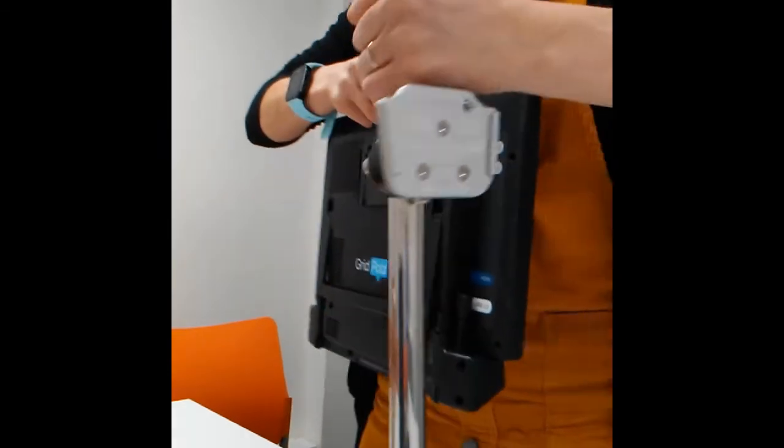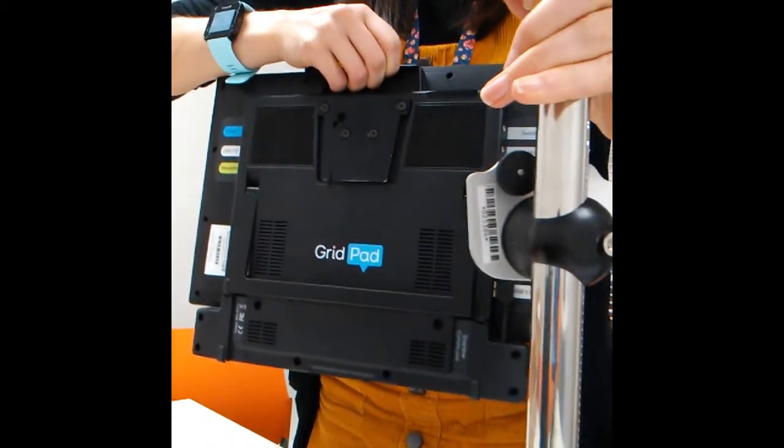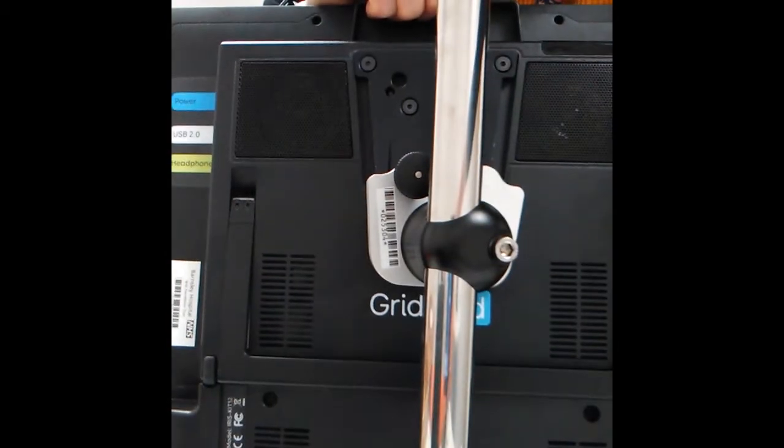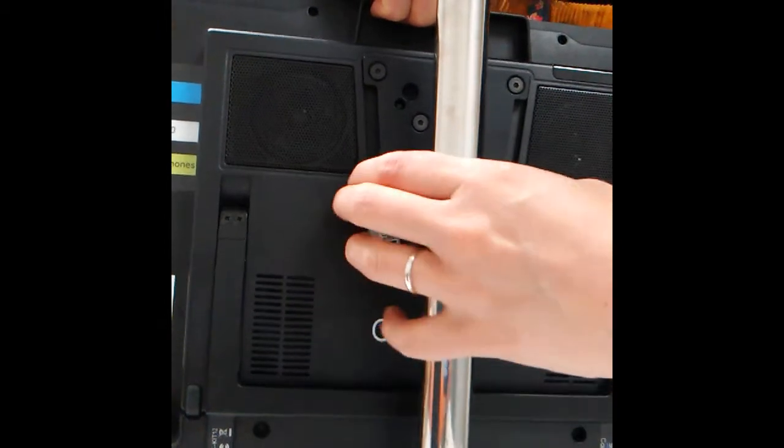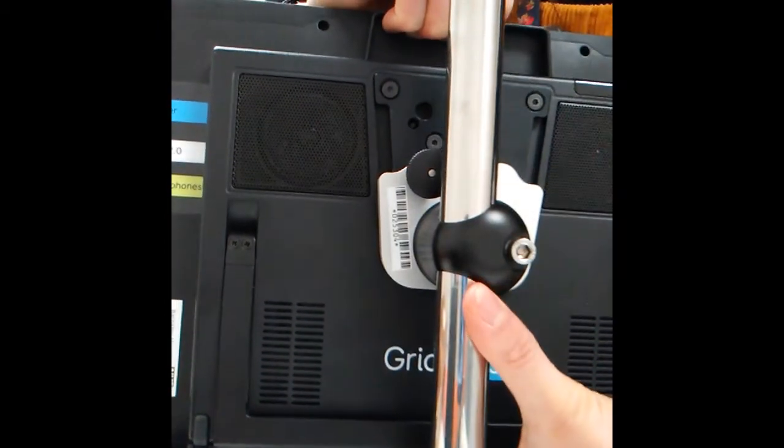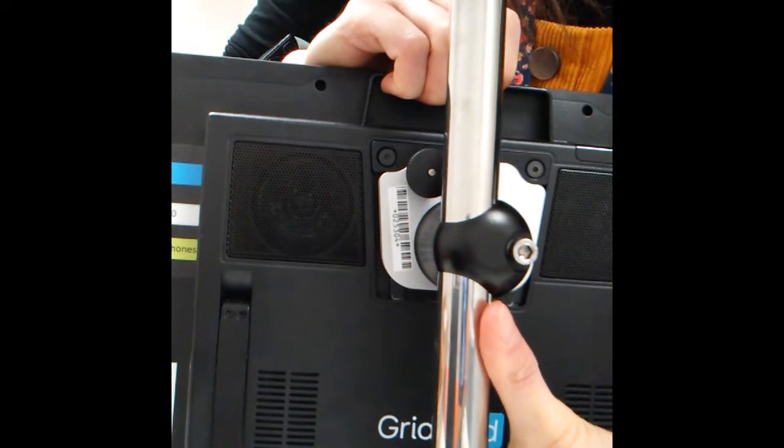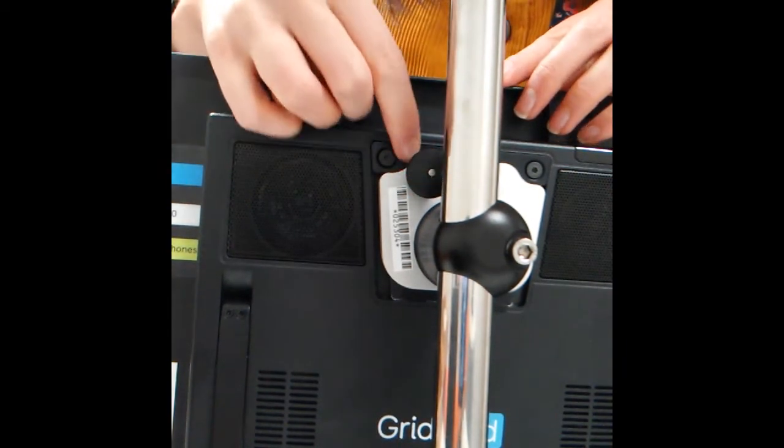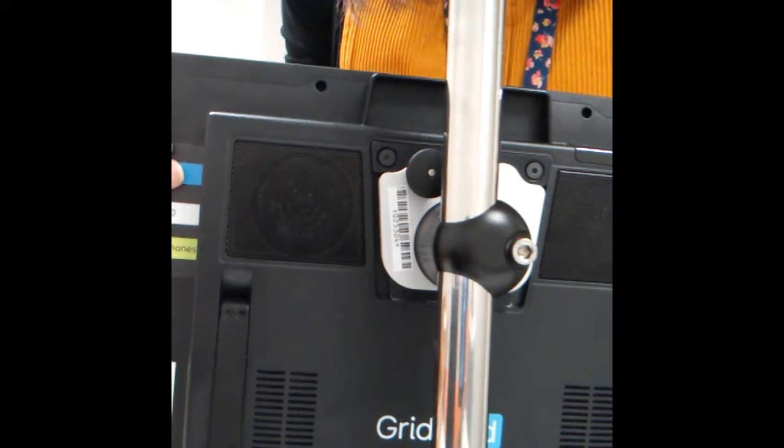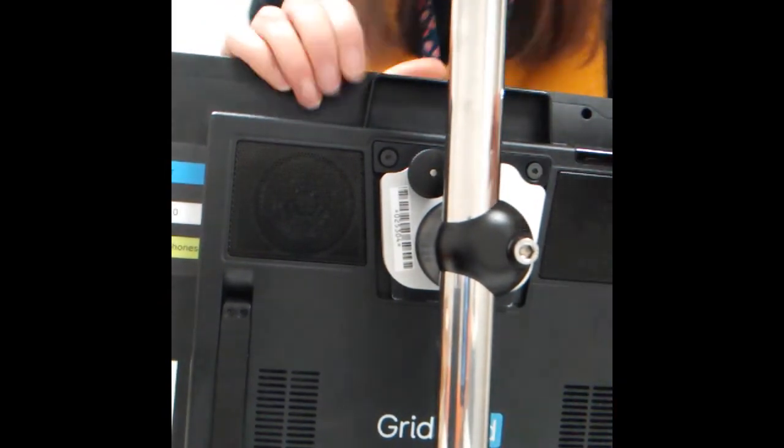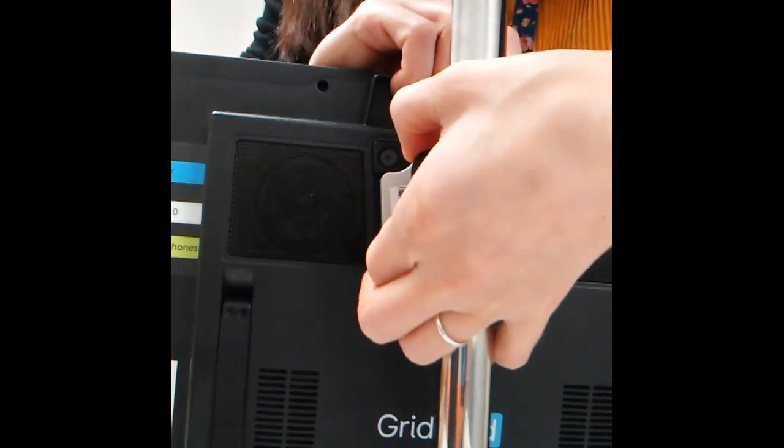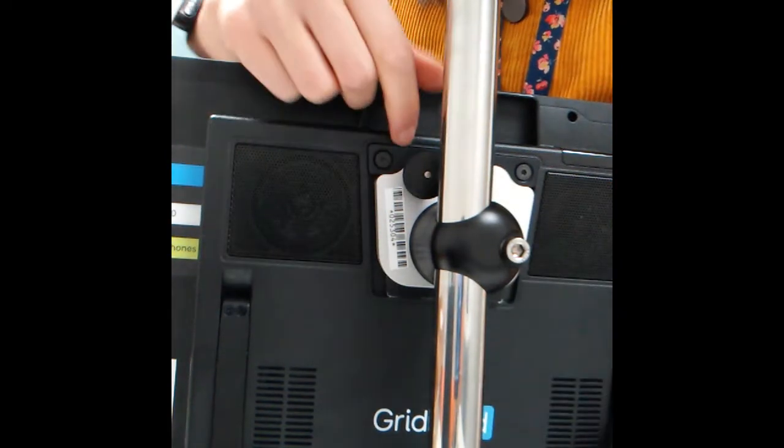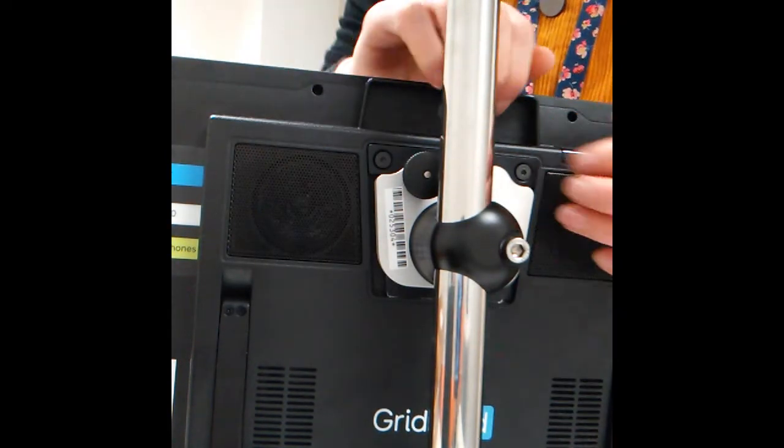So I will turn it round so you can be able to see a bit better. All we need to do is just slot that on. What you should do is you should get just a nice click when the pin goes into the hole in the back of the device. And it should be nice and sturdy. If you're getting any kind of wobbling, then it might mean that this pin is not correctly in. So you need to just make sure to try it again.